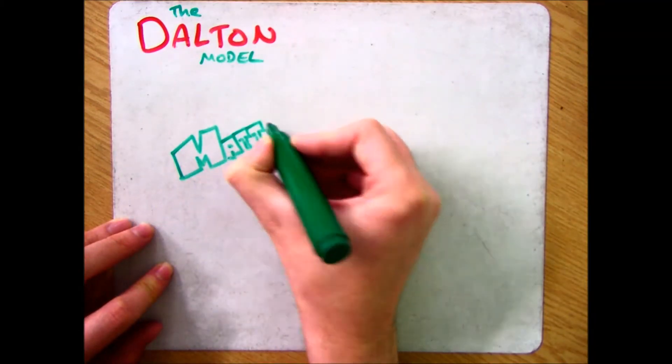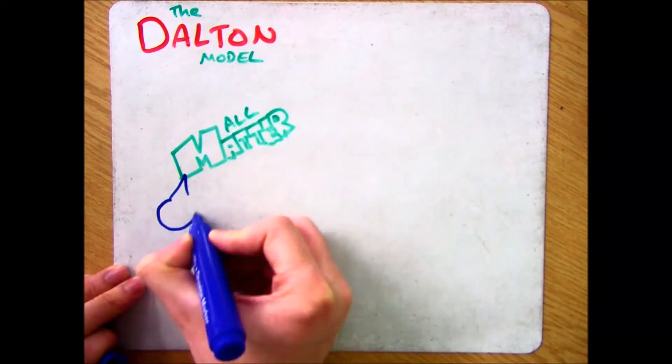John Dalton was a chemist who was born in 1766 and he started to investigate atoms in the 1800s.